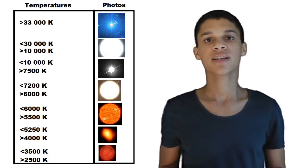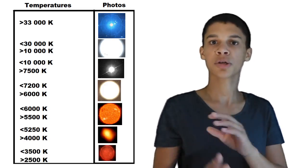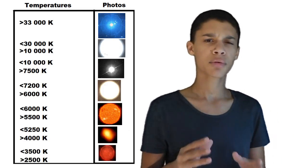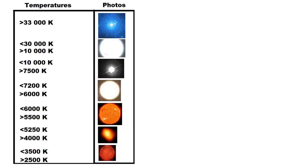And that is how we calculate the temperature of the surface of a star. Now we are going to see the few colors that stars can have depending on their temperature. Here's a table that shows the colors depending on the temperature of the surface — so in general, this is what a star's color can be.